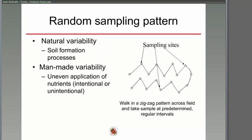We use a random sampling pattern to account for natural variability from parent material, soil formation processes, and man-made variability such as uneven applications — especially with manure — or spreader overlap. Walk a zigzag pattern across the field and take about a dozen to twenty samples.